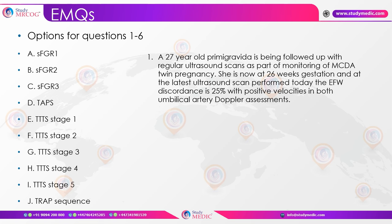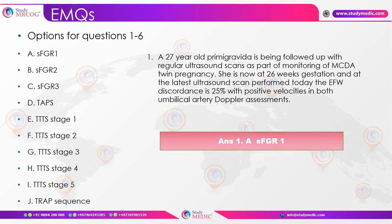EMQ case 1: A 27-year-old primigravida being followed up for MCDA twins is at 26 weeks. Ultrasound shows EFW discordance of 25%, which qualifies as sFGR, with positive velocities in both umbilical artery Dopplers. This qualifies as sFGR Stage 1.